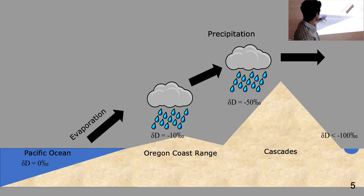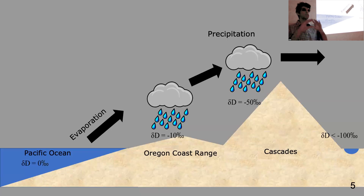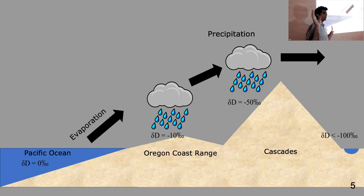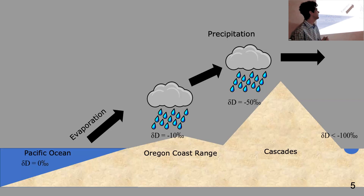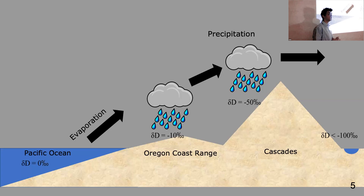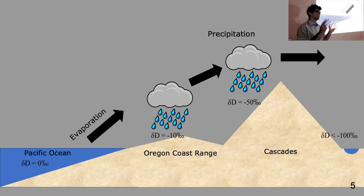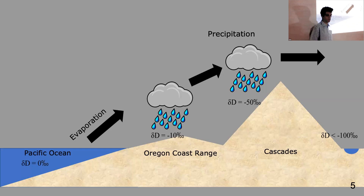What we see here is a very simplified cross-section of western Oregon, which is a really good way to describe some of the processes that influence the relative abundances of protium and deuterium in meteoric water. Starting all the way on the west in the Pacific Ocean, our water has a delta D value of zero — it is our standard, the composition we compare all other waters to. As we begin to evaporate water out of the ocean, these atmospheric processes take place and start to affect our delta D values. As we move over the coast range and the cascades, we see our delta D values start to decrease, and by the time we reach the eastern side of the cascades, we have depleted deuterium from meteoric water by about 100 per mil or more.